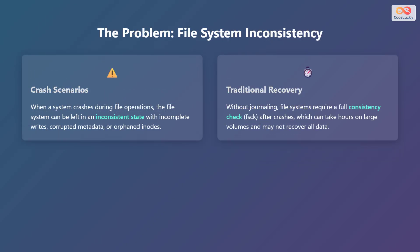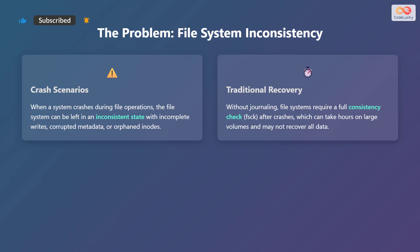Now let's discuss the core problem that journaling file systems address: file system inconsistency. When a system crashes during file operations, it can leave the file system in an inconsistent state. This includes incomplete writes, corrupted metadata, or orphaned nodes.